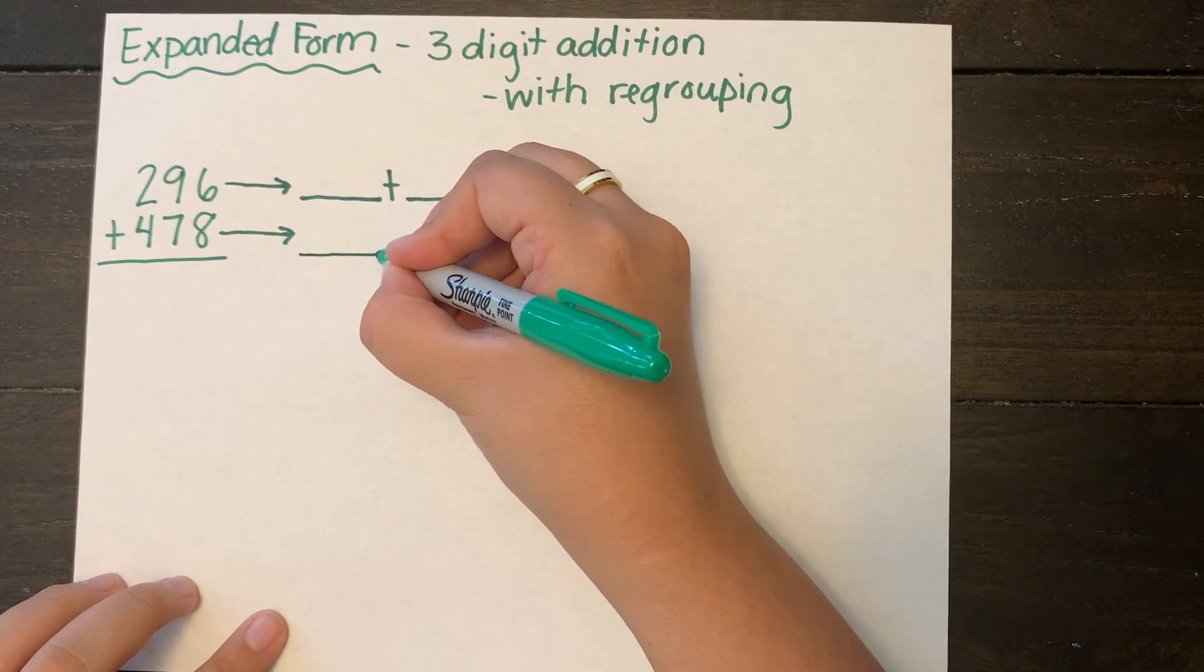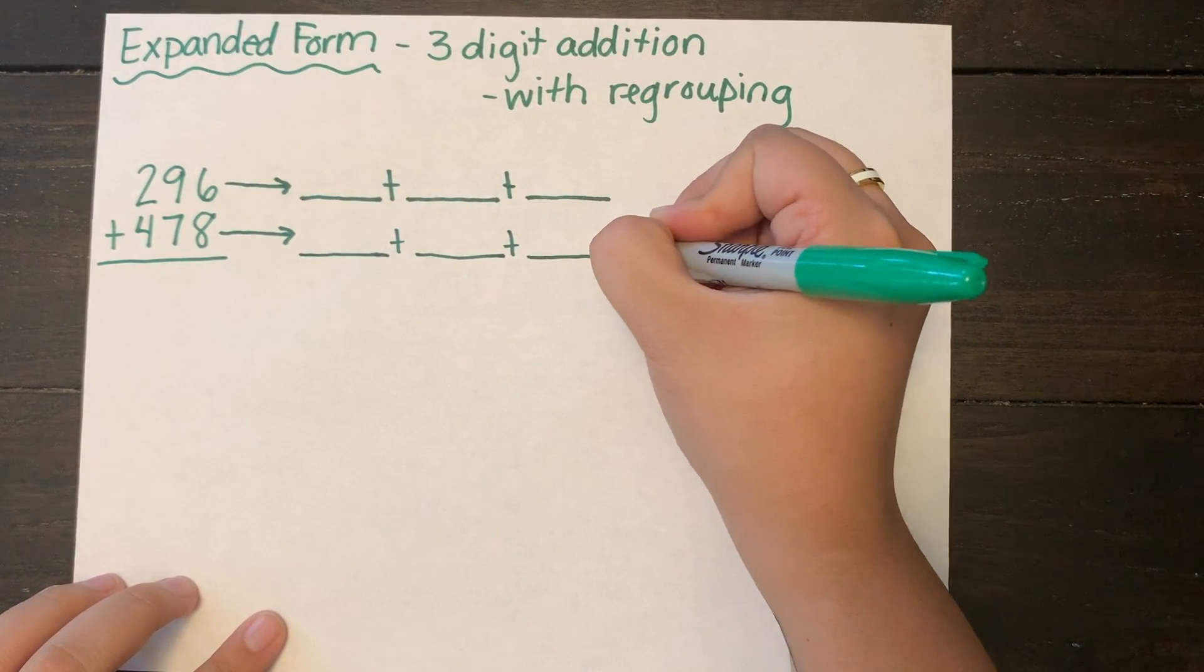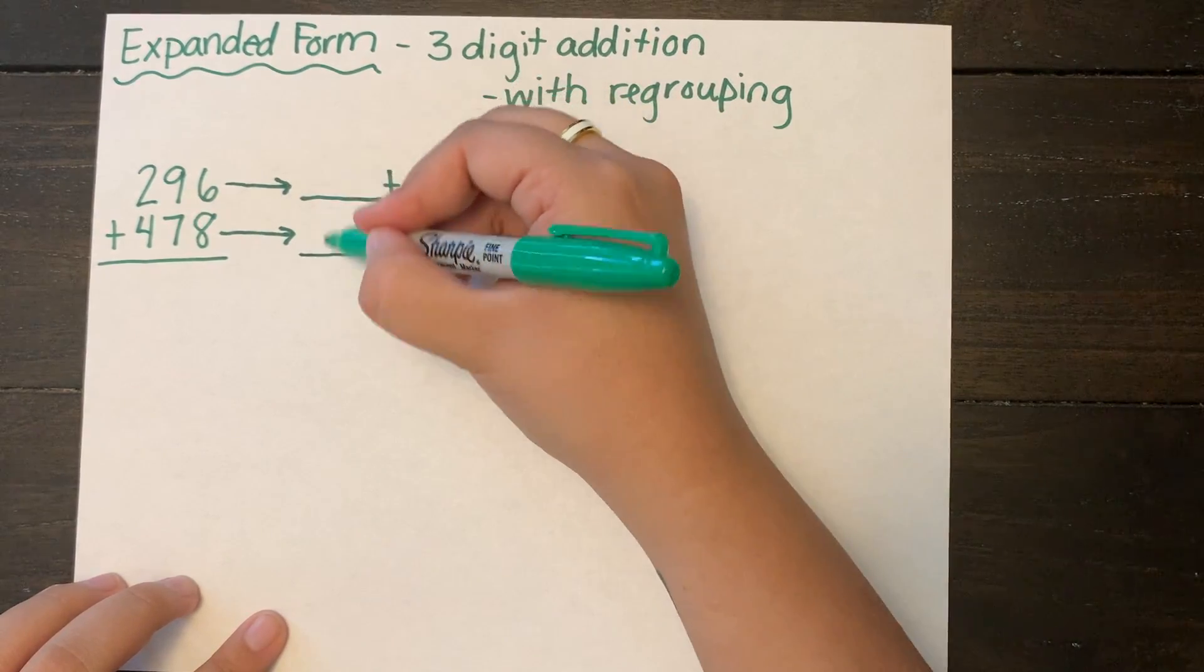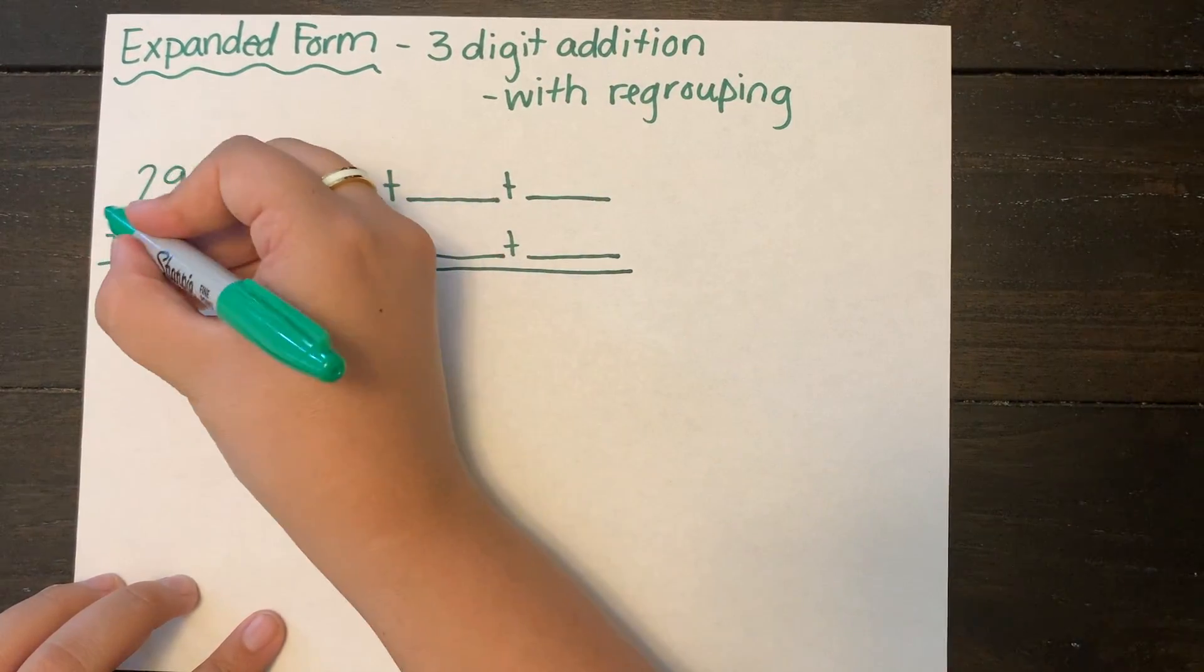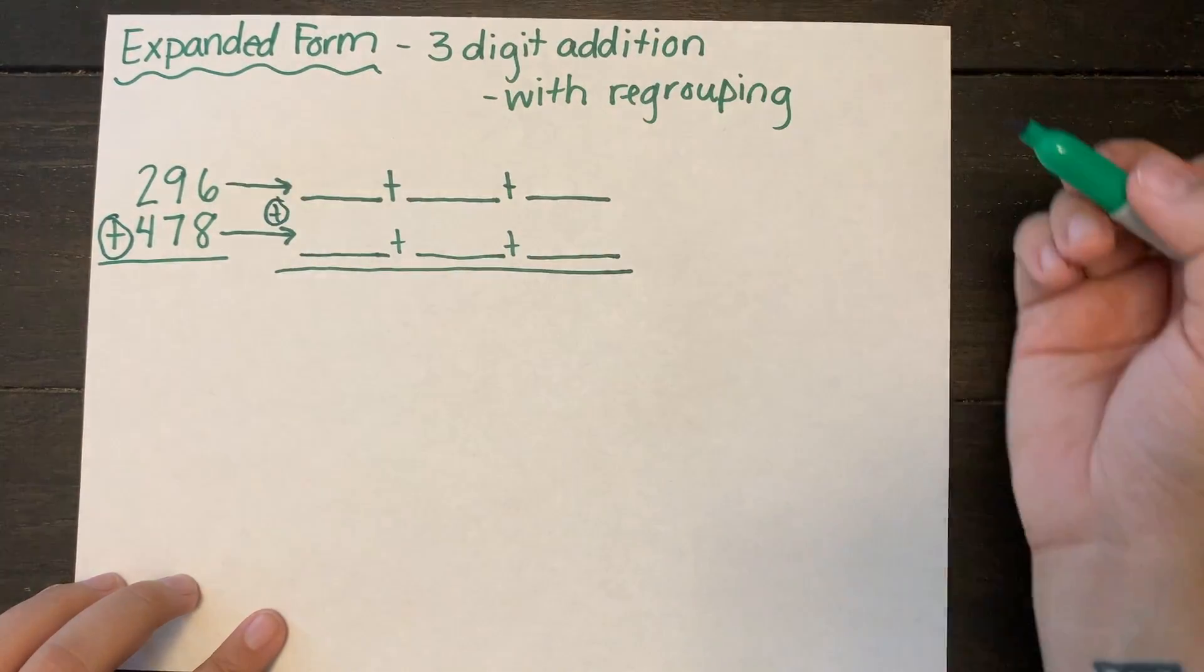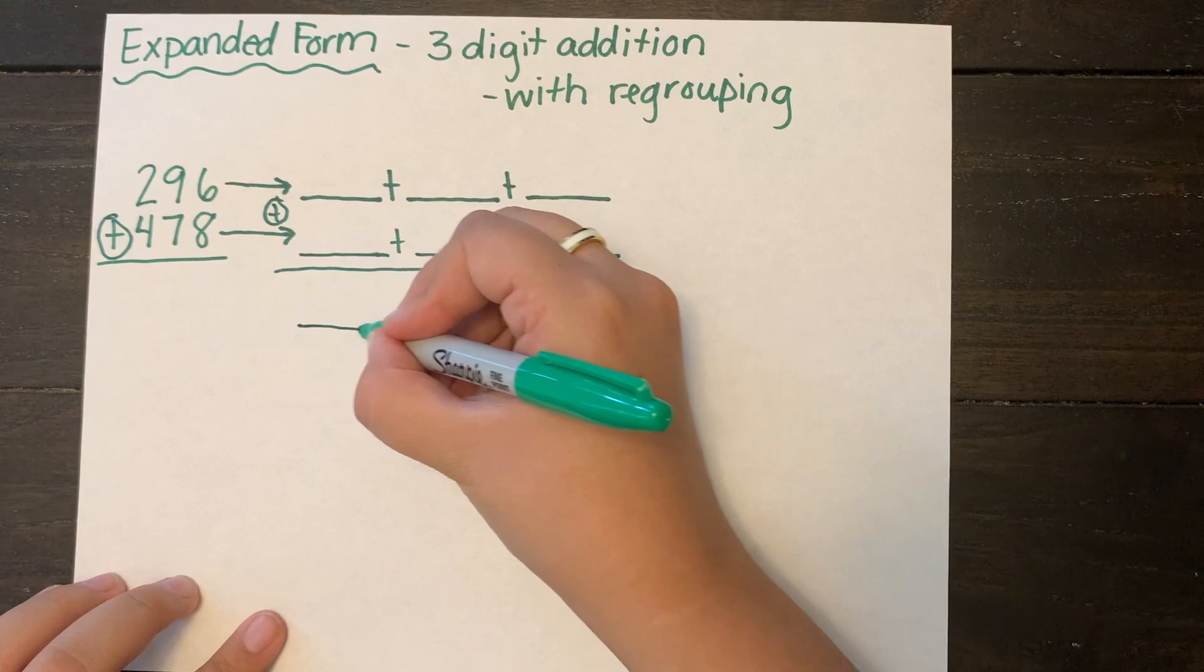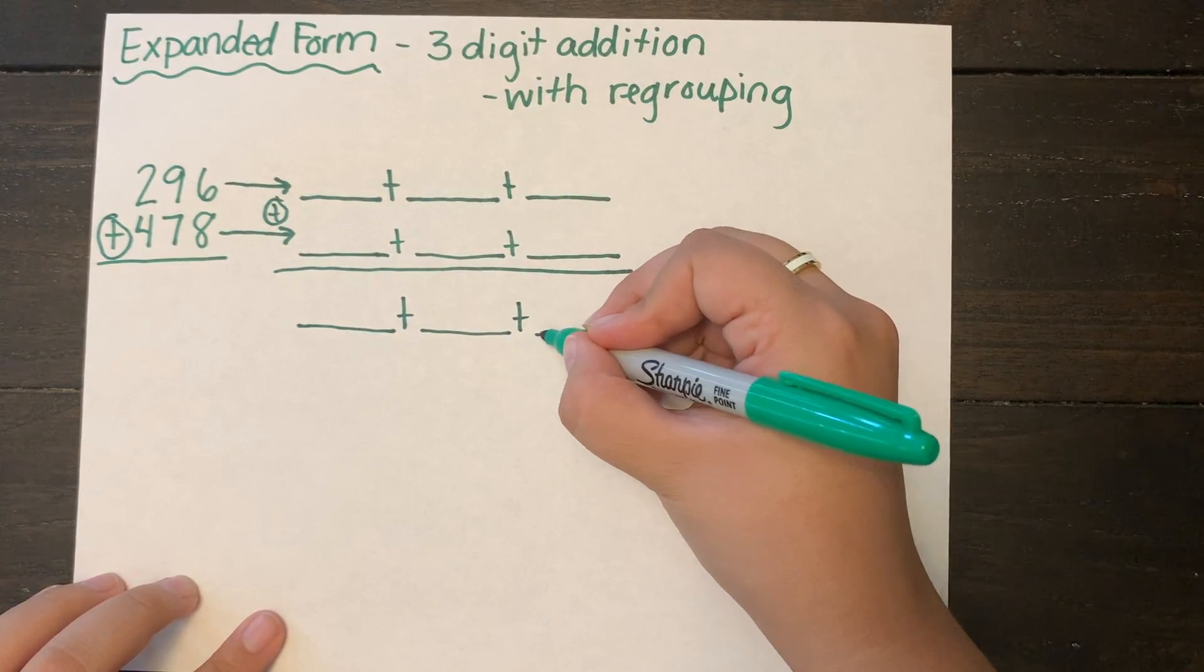These are my placeholders that's going to help me keep my work organized. If you are still struggling with expanded form, I would highly suggest keeping these placeholders in. Next I'm circling my operation and I'm rewriting it so that I remember what I am doing with this problem. And I'm putting my placeholder in for my answer.